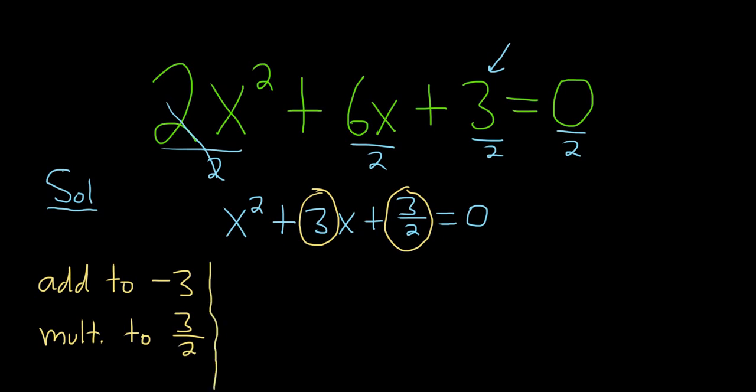These numbers, the answers to this problem are always going to be of the form. So you take this and divide it by 2. Negative 3 halves plus u. That is one of the answers to this problem. And the other answer is going to be negative 3 halves minus u. So these are both the answers to this equation up here, to our original problem. We just have to find u. So now we know that they multiply to 3 halves, so we put a 3 halves here.